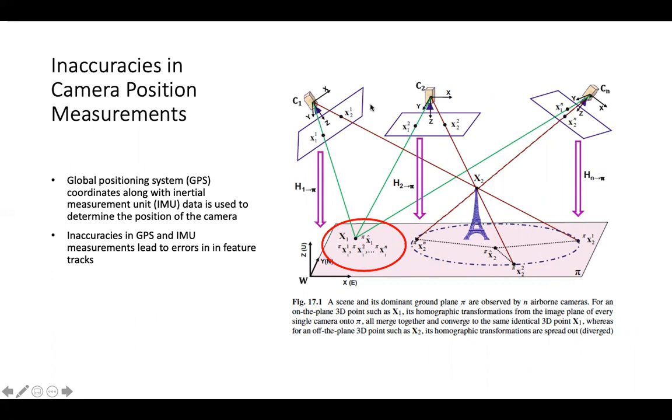The paper then talks about a couple of issues that arise in this model. First, the paper proposes using GPS coordinates for determining the locations and the orientations of the cameras. However, GPS stands for global positioning system and IMU stands for inertial measurement unit. That data is not exact and there are inaccuracies in GPS coordinates and IMU data. The example that it talks about is a point on the plane Pi—the feature track for that associated 3D point would not be centered on the point itself, but would be spread out.